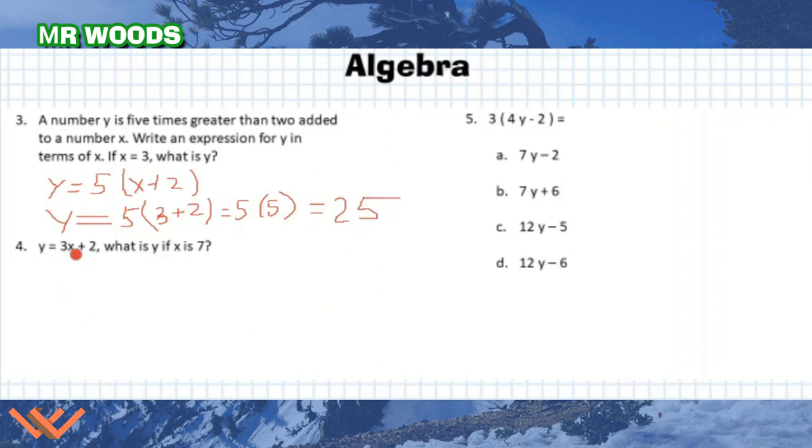Number 4. Y is equal to 3x plus 2. What is y if x is 7? Just plug it in. Y is equal to 3x, and I'm going to put in 7 for that x plus 2 equals. What's 3 times 7? That is 21. Plus 2. And 21 plus 2 is equal to 23. It's just substituting that number so that we can get the equation and get the answer.